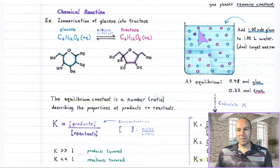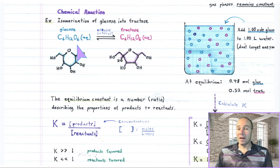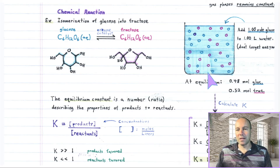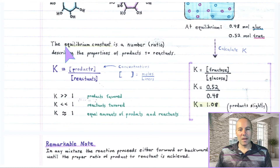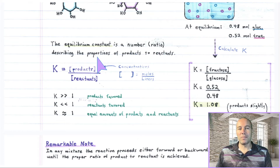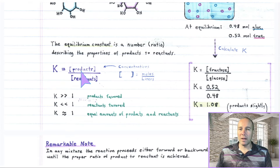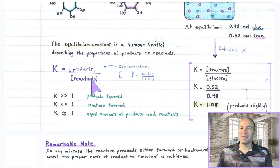This system reaches equilibrium after roughly half of the glucose has reacted. For a system at equilibrium, we like to quantify how much reactant versus product there is. We use the equilibrium constant — a number, a ratio, describing the proportions of products to reactants. Mathematically, it is the concentration of product material divided by the concentration of reactant material. Products go in the numerator and reactants in the denominator.